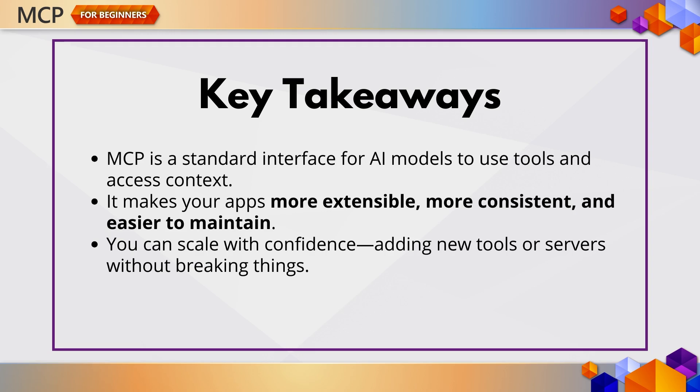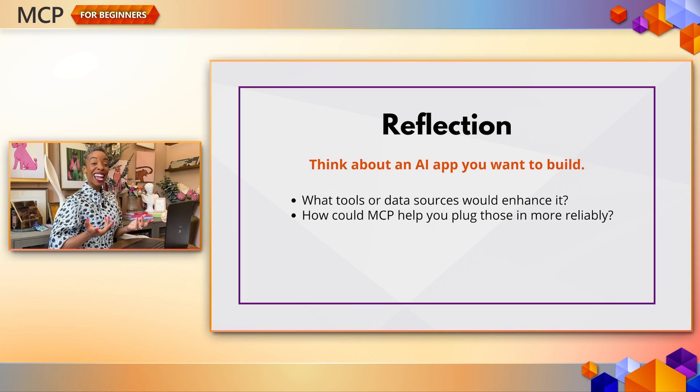To recap: MCP is a standard interface for AI models to use tools and access context. It makes your apps more extensible, more consistent, and easier to maintain. And you can scale with confidence, adding new tools or servers without breaking things. Think about an AI app you want to build — what tools or data would help enhance it, and how can MCP help you plug into those more reliably? That's it for this chapter. In the next video, we'll start exploring the core concepts of MCP, breaking down what makes it tick and how it all fits together. Don't forget to check out the SDKs on GitHub, and I'll see you in the next video.